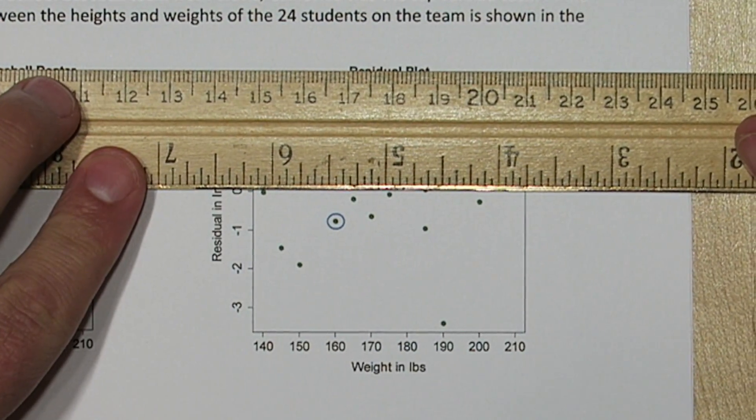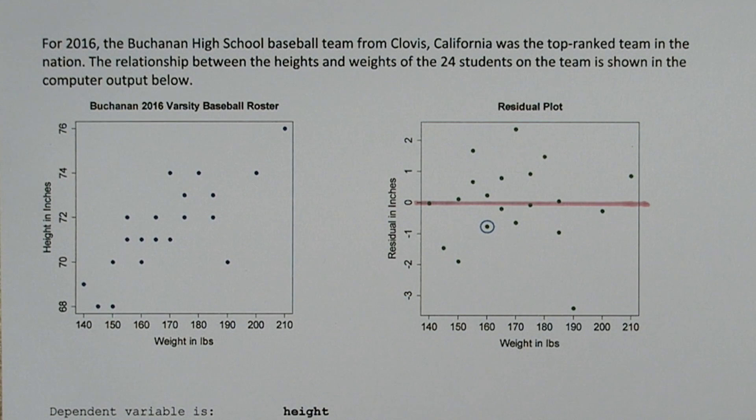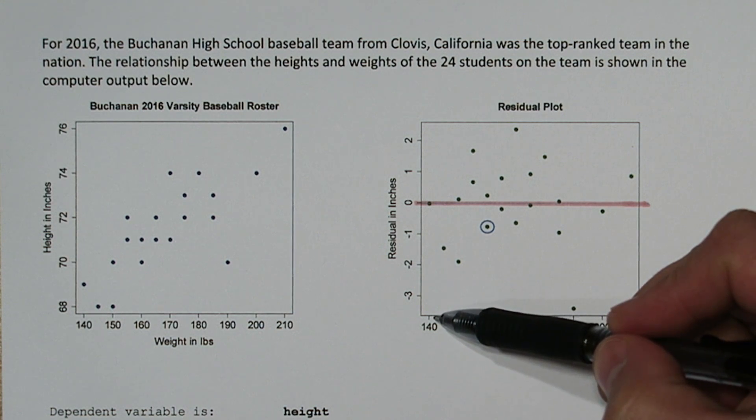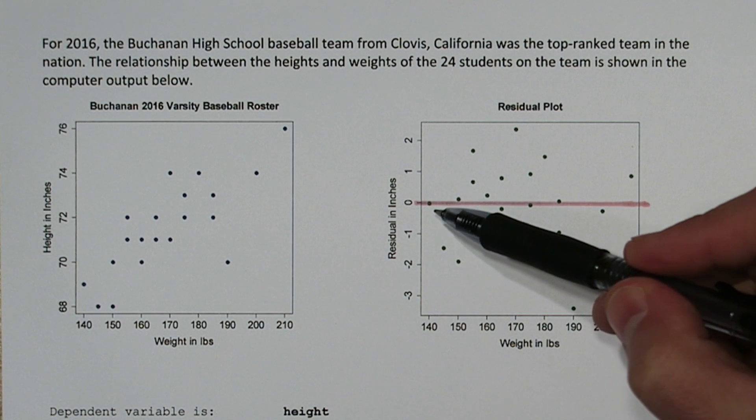The first thing I'm going to do is add a line at y equals zero to the residual plot. This represents our model. So you can see our model performed very well for some values. This player who weighed 140 pounds had their height predicted perfectly by the model.